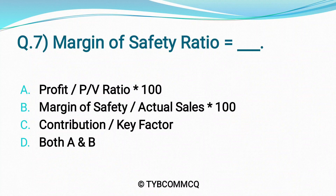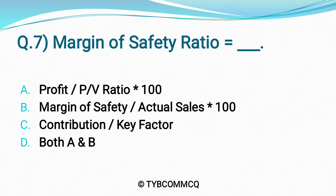Question No. 7: Margin of Safety Ratio is equal to ___. Option A: Profit divided by PV Ratio into 100. Option B: Margin of Safety divided by Actual Sales into 100. Option C: Contribution divided by Key Factor. Option D: Both A & B. The correct option is Option D — Both A & B.